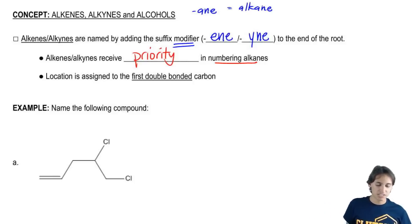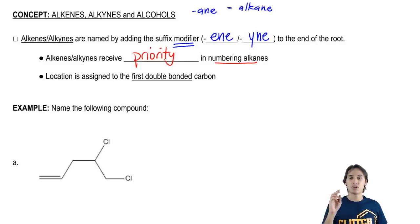Then finally, this can get tricky because these double bonds go over two carbons. So sometimes it can be tricky. What's the location? Is it the first carbon or the second carbon? The location is always assigned to the first double bonded carbon or triple bonded carbon.